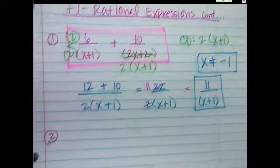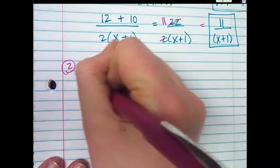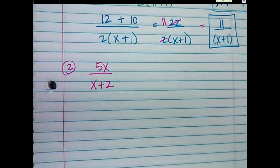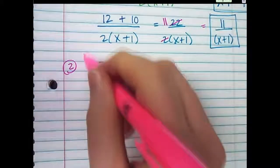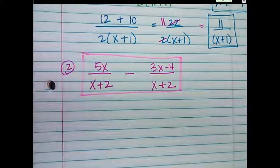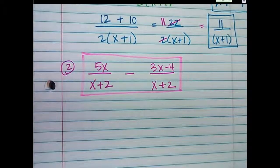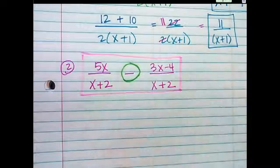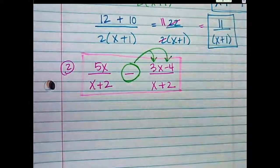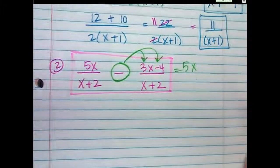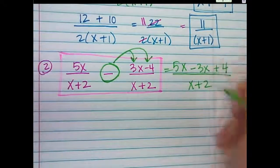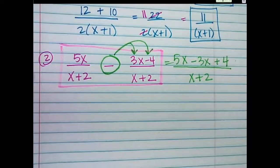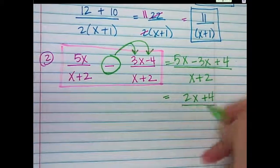Let's try another one. Number 2: 5x over x plus 2, minus 3x minus 4 over x plus 2. Can I factor any denominators? No. So we can go ahead and combine them because they're already the same. Be careful — you need to make sure you distribute the negative. So I have 5x minus 3x plus 4 over x plus 2.